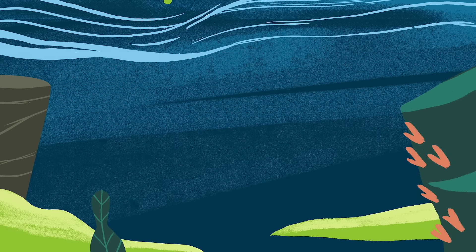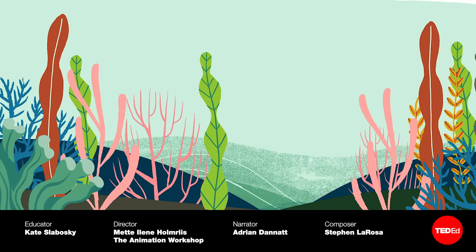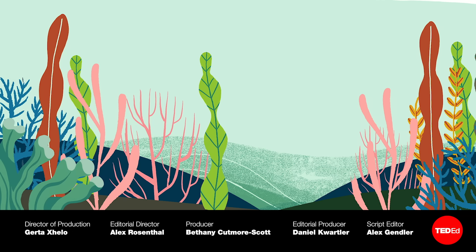Fish need our help. By 2050, there will be more plastic and trash in the ocean than fish. Could the Earth really run out of fish? Find out more about the serious threat of overfishing and what we can do to prevent it.